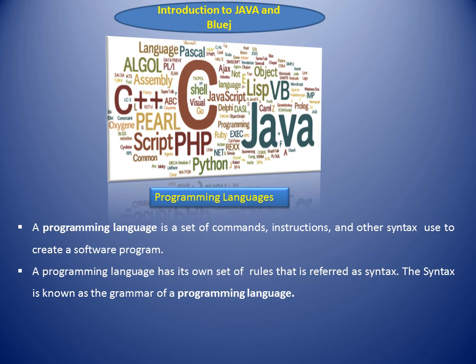Now if we ask, what is a programming language? A programming language is a set of codes or instructions used to communicate with the machine. Programming language allows us to give instructions to a computer in a language that the computer understands.